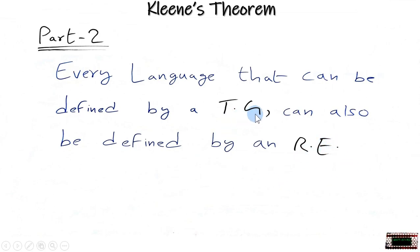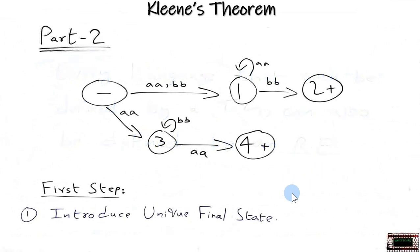So basically, transition graph is the diagrammatical representation of the regular expression. It is saying that if a language is there which can form a TG, it can also form a regular expression. So we will prove this by our example. This is our question and we will solve this to prove Kleene's Theorem part 2.